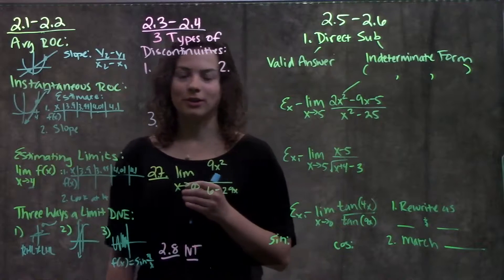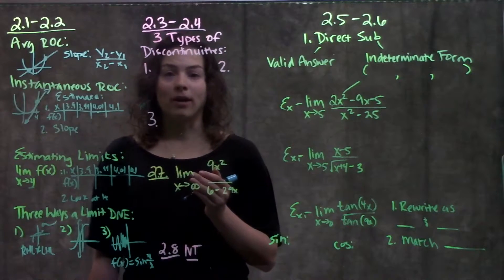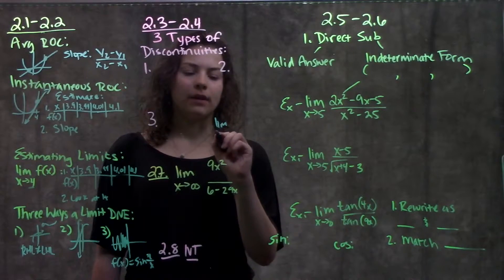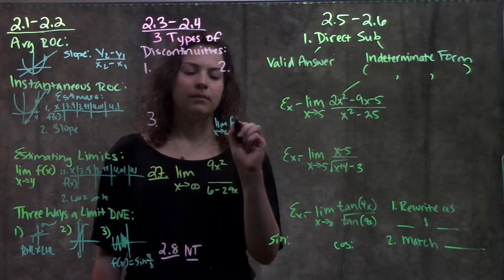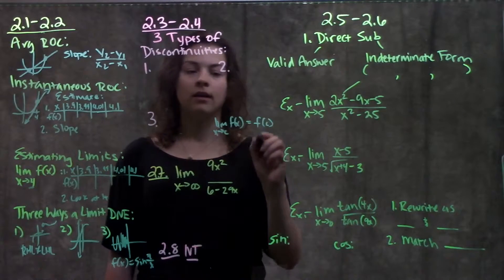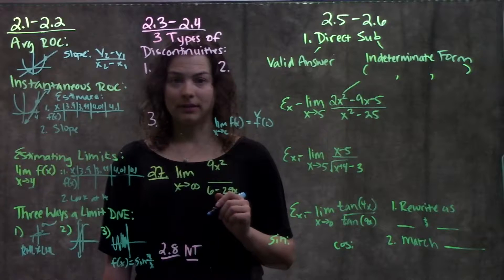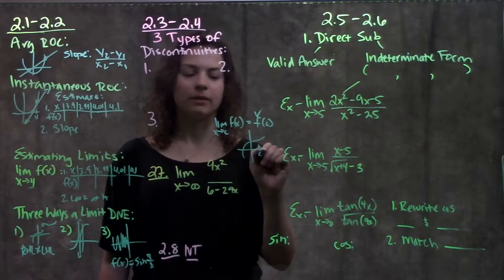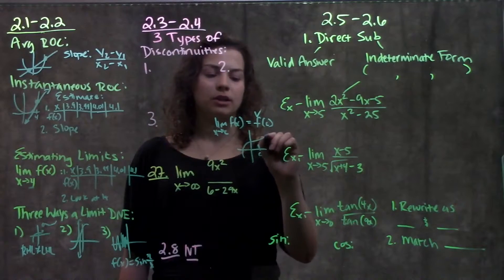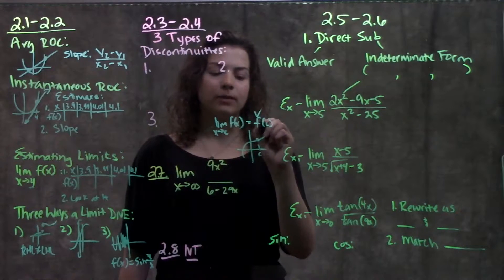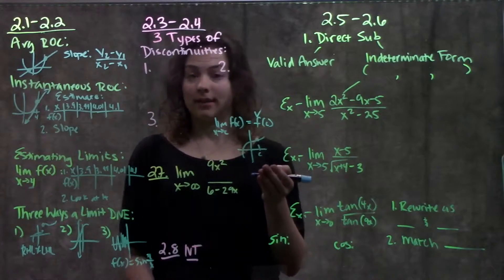Moving on to 2.3 to 2.4, these sections are about continuity. If you remember, our definition of continuity is if the limit as x approaches c of some function f of x is equal to f of c, then our function is continuous. Which makes sense because if we were to draw this out, we have some value c here, and if the limit of our function, what the left and the right hand side are approaching, is the same as what this function is defined at, then it's continuous.